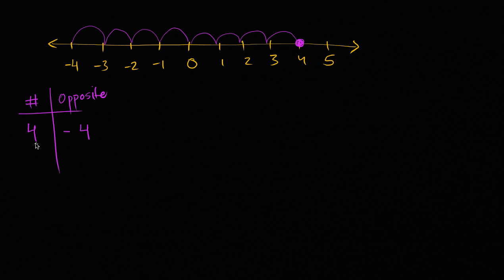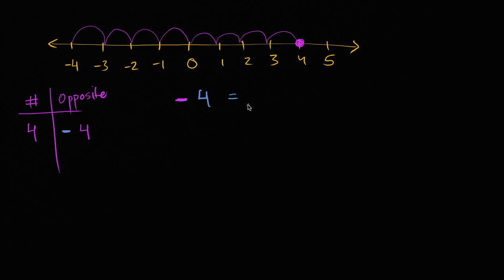Another way of thinking about it is that this negative symbol literally means 'opposite.' So you can take this negative symbol as meaning opposite. Negative four literally means the opposite of four.